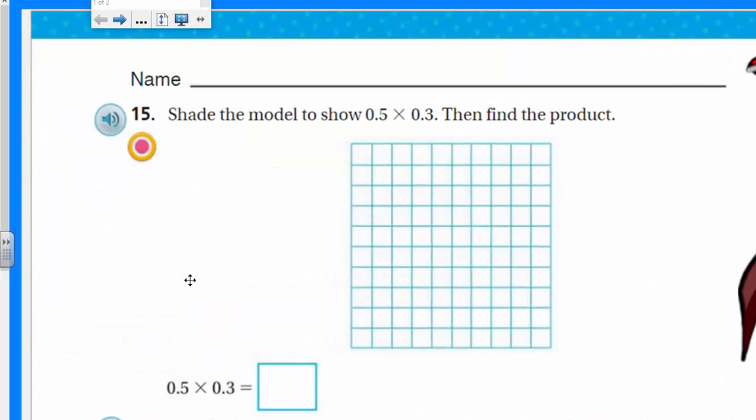This is number three, and this is chapter four review. Let's go ahead and get cracking. It says here that we're going to shade a model to show five tenths times three tenths. Then we're going to find the product. Alright, I like these. These are a lot of fun. And I do have a special surprise. Wait till you see this.